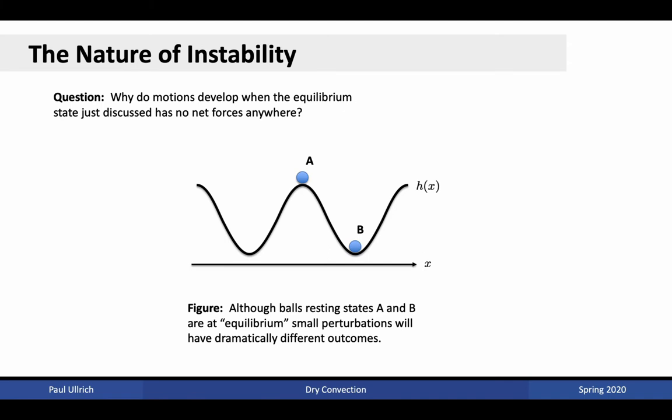Convection is closely related to the notion of instability. This question — why do motions develop when the equilibrium state has no net forces anywhere — is closely associated with the problem of placing a ball on a hill slope. We have two configurations: one with a ball at the top of a hill, and one with a ball at the bottom of a hill. Both states are technically in equilibrium, but any small perturbation will have very different results. In configuration A, a small perturbation can grow — the ball rapidly rolls down the hill. Whereas in configuration B, a small perturbation confines the ball to the bottom of the valley.